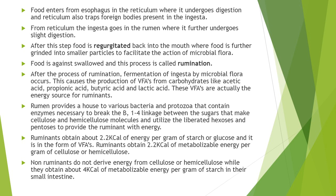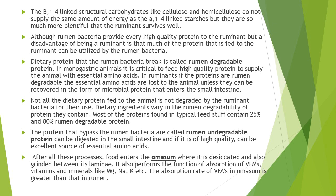On the other hand, non-ruminants don't derive any energy from cellulose or hemicellulose but obtain about 4 kilocalories of metabolizable energy per gram of starch in their small intestine. Fermentation in non-ruminants or monogastric animals occurs in the large intestine and somewhat in the small intestine. The beta-1,4 linked structural carbohydrates like cellulose and hemicellulose don't supply the same amount of energy to the ruminant as alpha-1,4 linked starches do to non-ruminants, but cellulose and hemicellulose are so plentiful that the ruminant survives well. Non-ruminants cannot digest cellulose and hemicellulose.